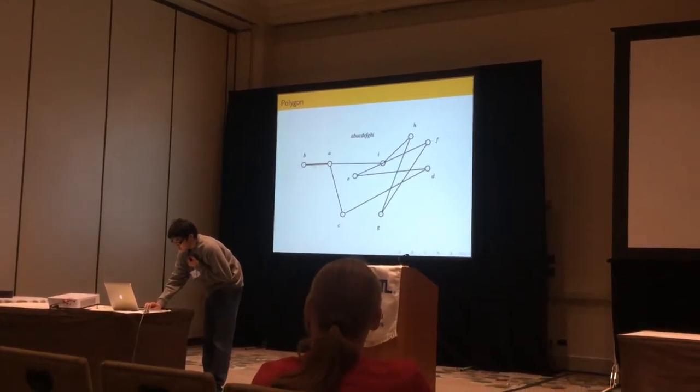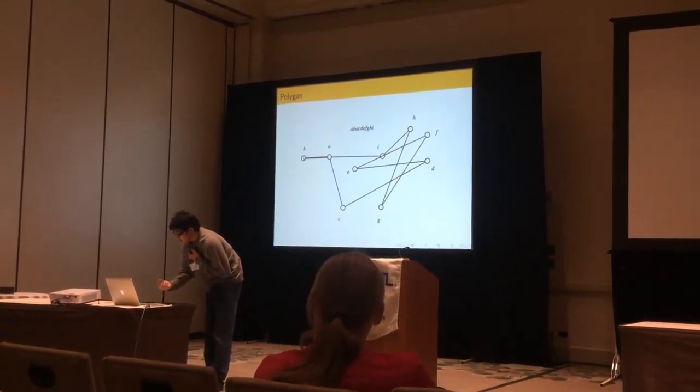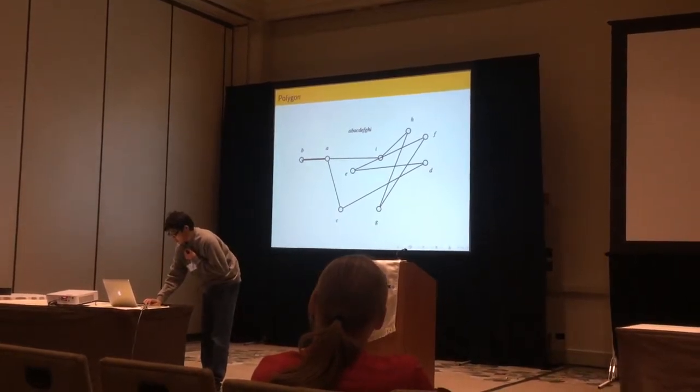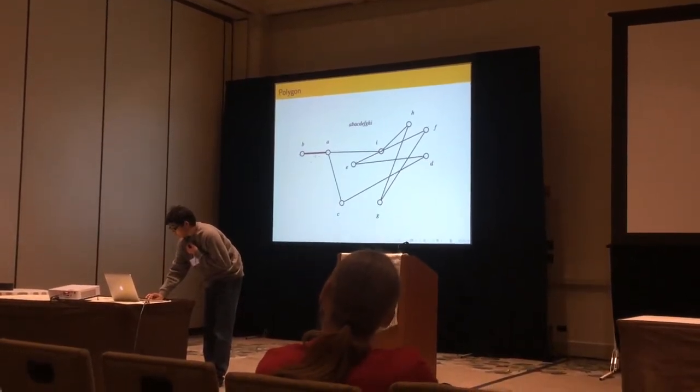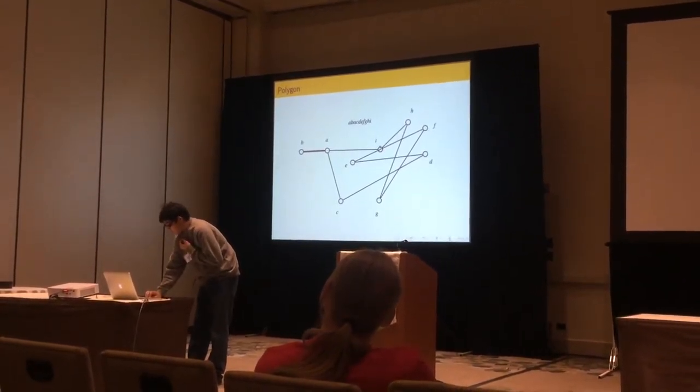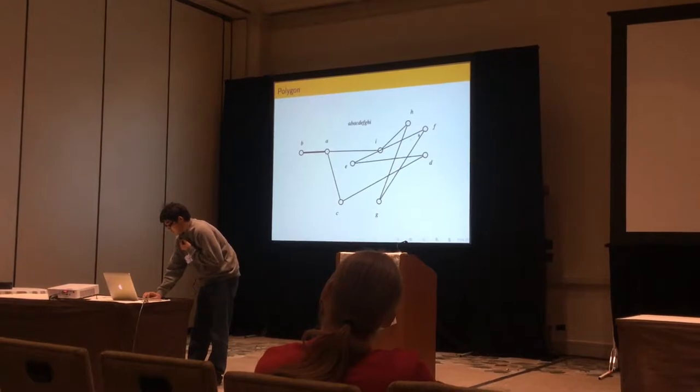One of them is called a spur. A spur is a vertex such that it's incident to two edges that overlap each other. So here, E is a spur. And the other one is a fork. A fork is a vertex such that it's contained inside the interior of another edge. So here, I is a fork.